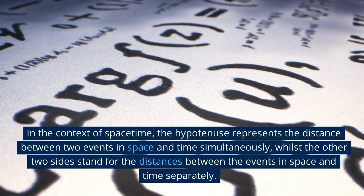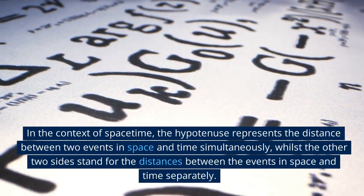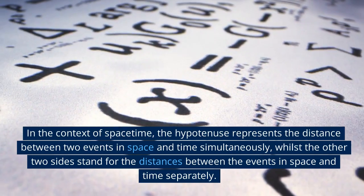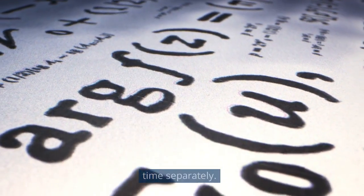In the context of space-time, the hypotenuse represents the distance between two events in space and time simultaneously, whilst the other two sides stand for the distances between the events in space and time separately.